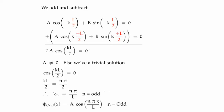In this case n, the principal quantum number, is an odd integer, and we have the first solution to our time independent Schrödinger equation: A times the cosine of n pi x over L, where n is odd. For that reason we refer to it as the odd solution.